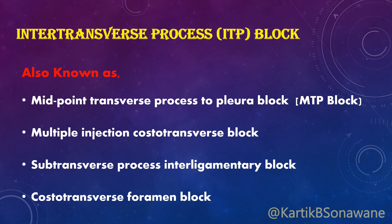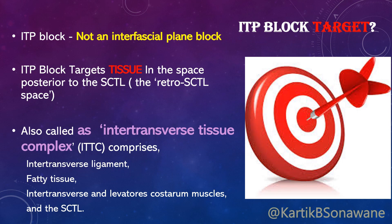It is mainly indicated for breast surgery or thoracotomies. This block targets the retro-superior costo-transverse ligament space, which has a more direct and closer pathway to the thoracic paravertebral space, and appears anatomically more advantageous than the ESP block or retro-laminar block. Unlike other interfacial plane blocks, the ITP block cannot be considered a true interfacial plane block, as it targets the tissue in the space posterior to the superior costo-transverse ligament.